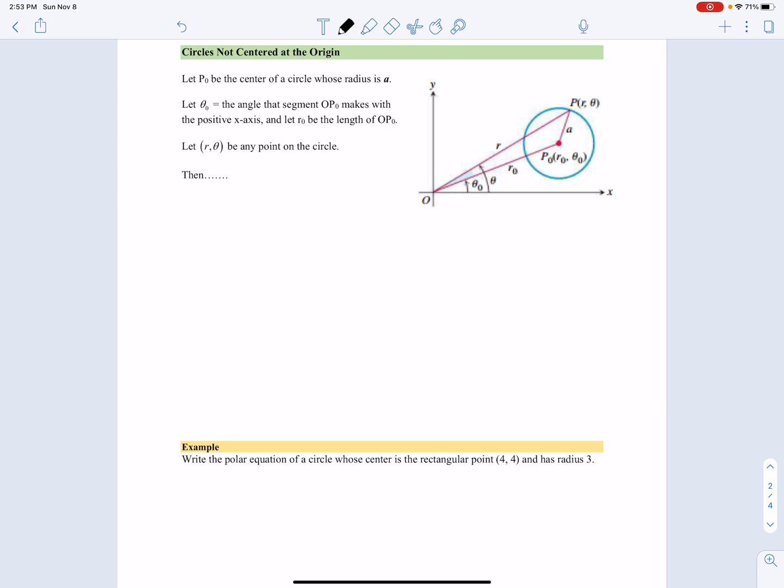Looking at this picture here, if I draw a line from the origin, because remember, polar coordinates, everything's measured from the origin. If I draw a line from the origin to the center, that is going to have length r sub zero.